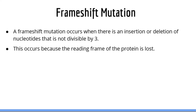Next we will talk about frameshift mutations, which unlike point mutations, occur due to either a deletion or addition of nucleotides. If the addition or deletion of nucleotides is not divisible by 3, this will result in loss of the reading frame. These types of mutations have a devastating effect on protein function because the resulting protein has none of the physical properties of the original protein.